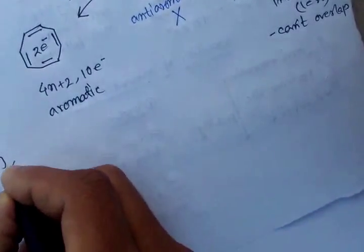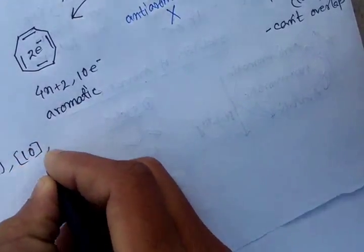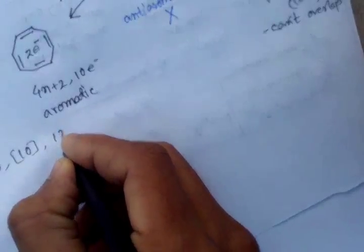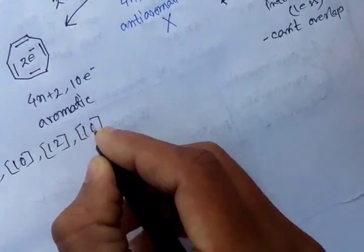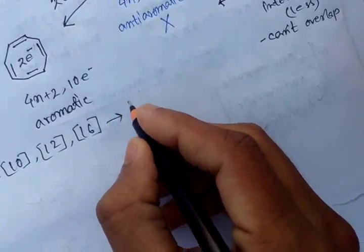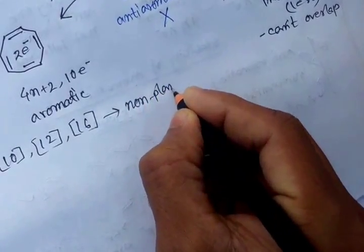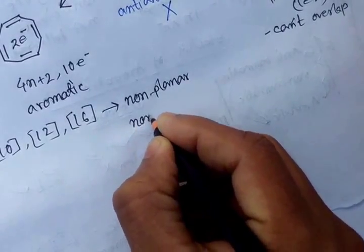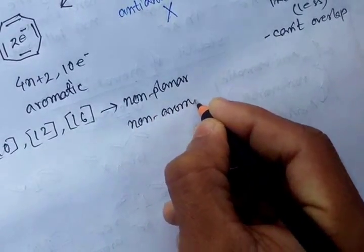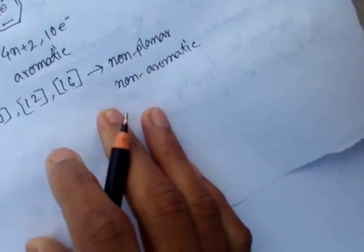Not only the 8-annulene but also the 10-annulene, 12-annulene, and 16-annulene are all non-planar structures, so they are non-aromatic compounds — not anti-aromatic.